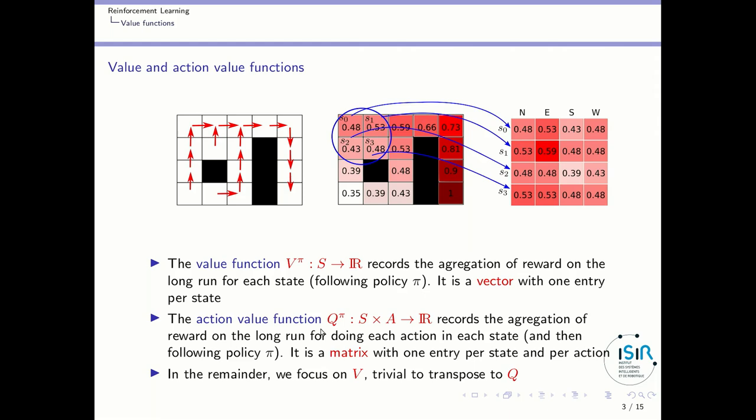By contrast, the action value function is something more complicated — it's a matrix. We define it with qpi and it tells you the value of being in a particular state, for instance here, doing a particular action and then following policy pi. But you could do an action which is different from the policy here. For instance, you could say what is the value of being there, going there, and then following policy pi.